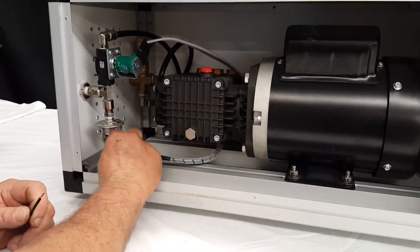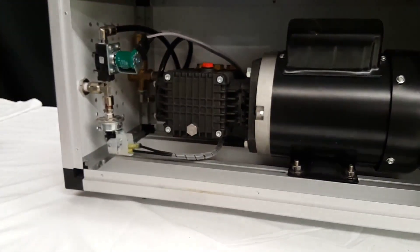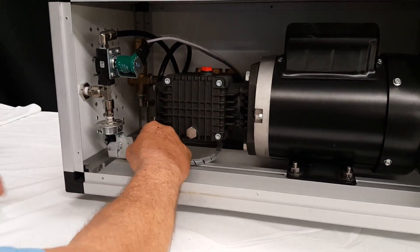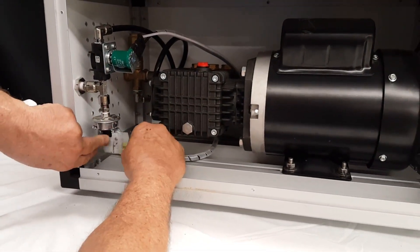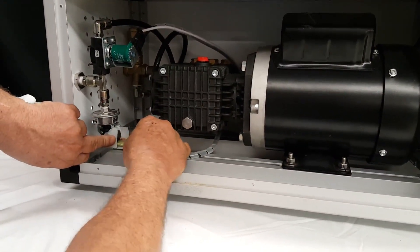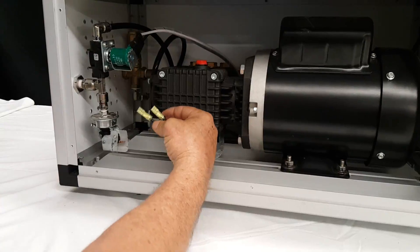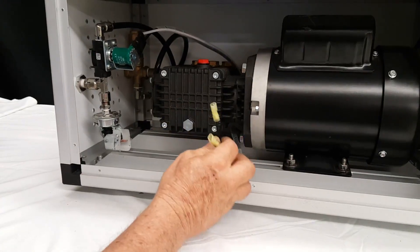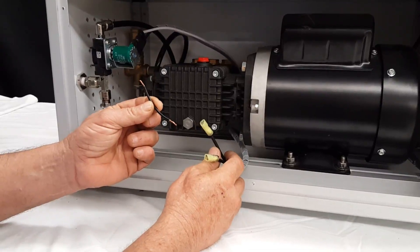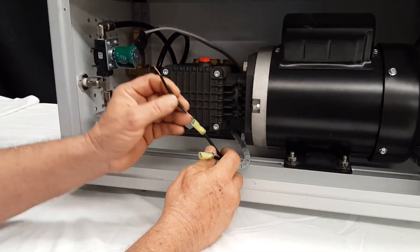Pull by wiggling these side to side, being careful not to break the stud off of the pressure switch. Take both of them out. Then you're going to need a little piece of jumper wire.